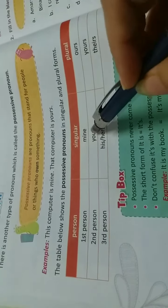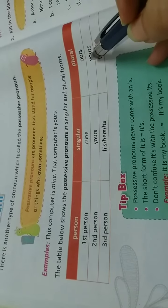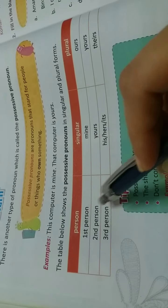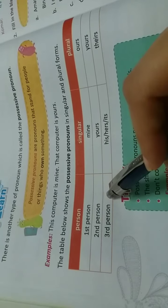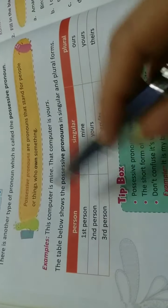For second person, that means for you perspective. Third person: he, she, it, they. So, for this, in singular form,